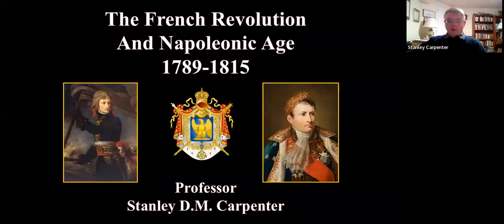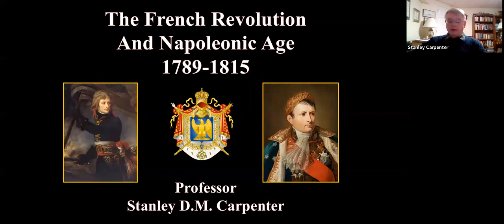I'm going to start off with some of the highlights of the French Revolution, the reasons for it, and then I'll go on to Napoleon Bonaparte, how he rose to the emperorship and ultimately the collapse — the rise and fall of the Napoleonic Empire. I want to close with a concentration on two events which really characterize the beginning of the end: the Battles of Waterloo and Trafalgar. Let's head to the French Revolution.